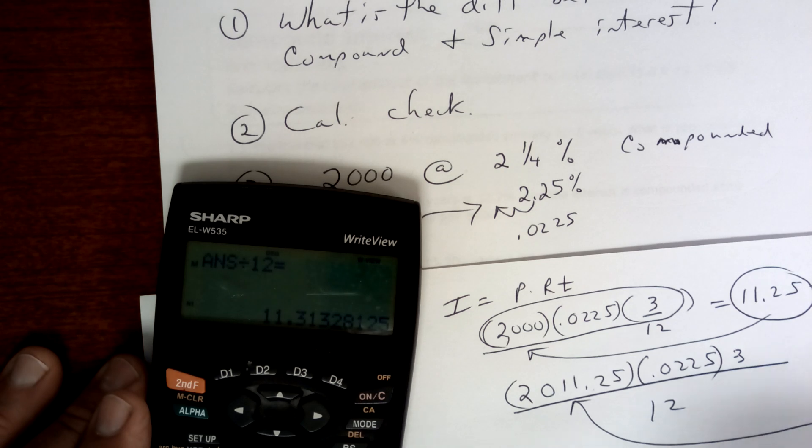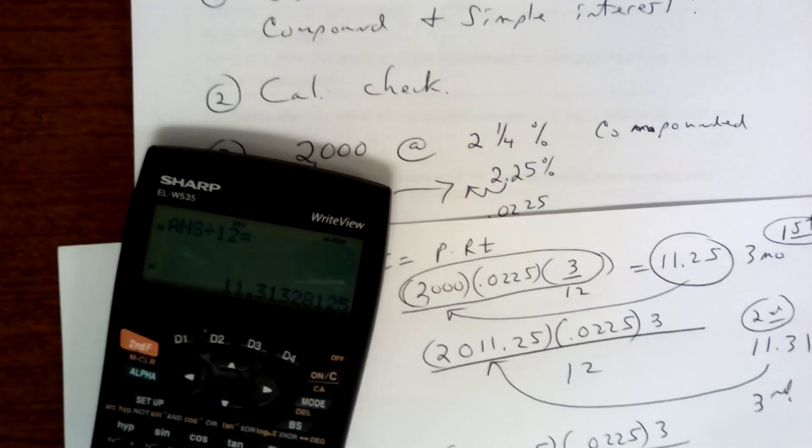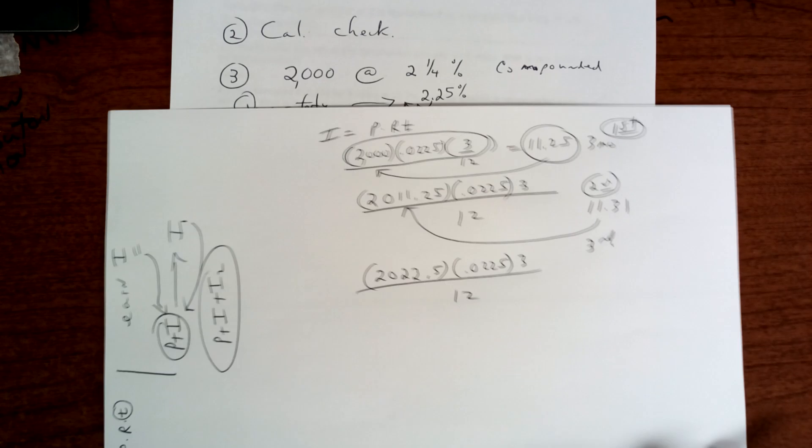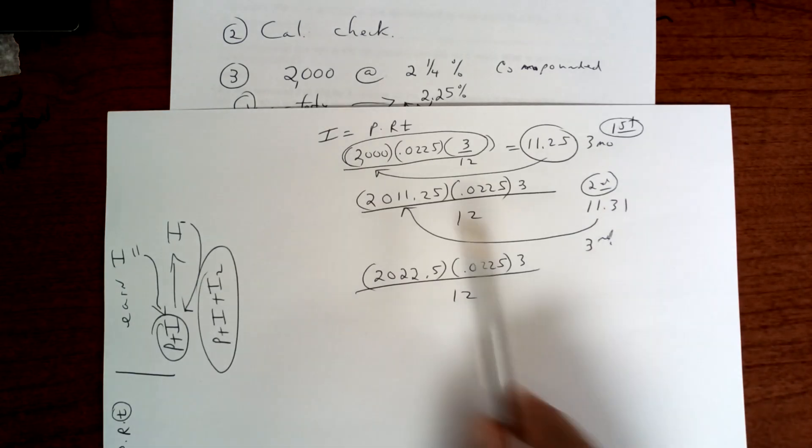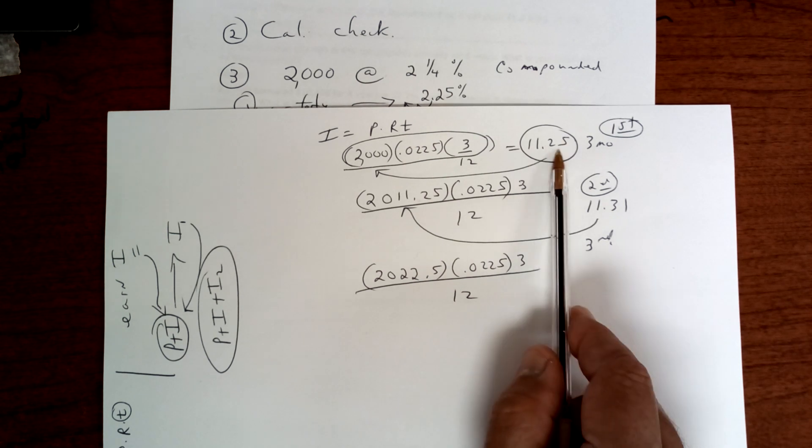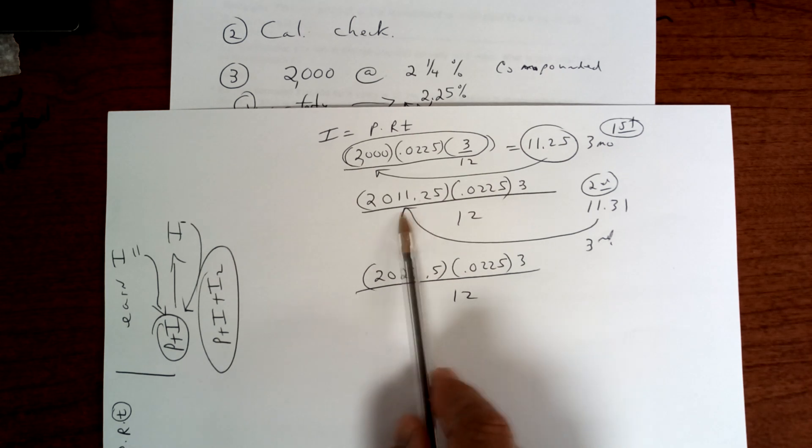You're going to add this back to the principal, so that looks like 2022, you add this up, and then point 56. That's your new principal times the rate times 3 divided by 12. Now you've got to do this two more times. I did it twice, so take a look at my work.